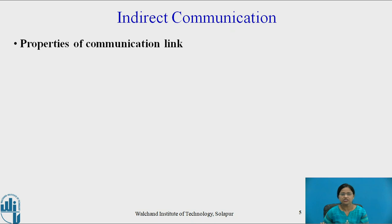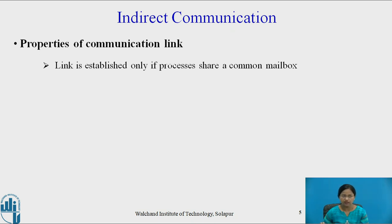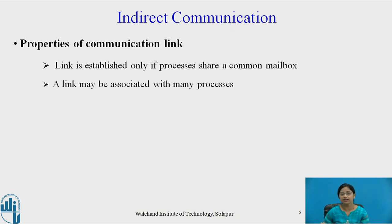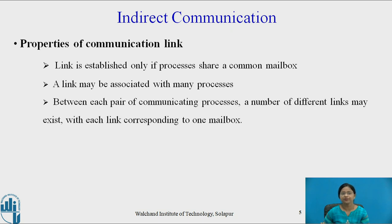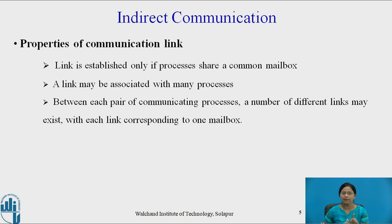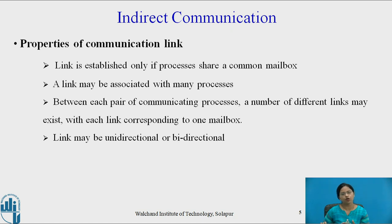The properties of a communication link in indirect communication are: a link is established only if processes share a common mailbox; a link may be associated with many processes; between each pair of communicating processes, a number of different links may exist, with each link corresponding to one mailbox; and though there are multiple pairs of communicating processes, each two processes must share a common mailbox.